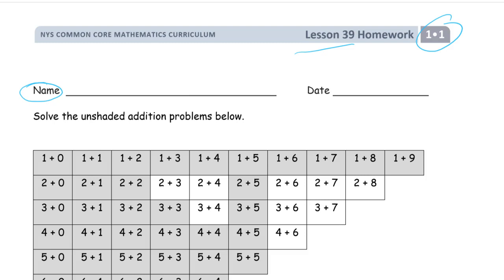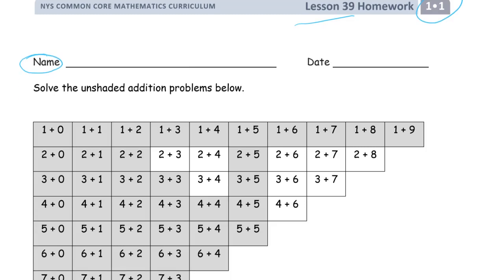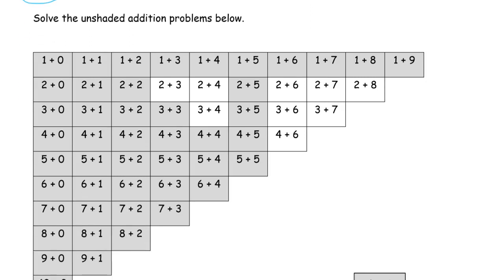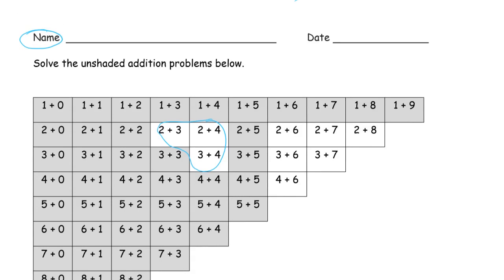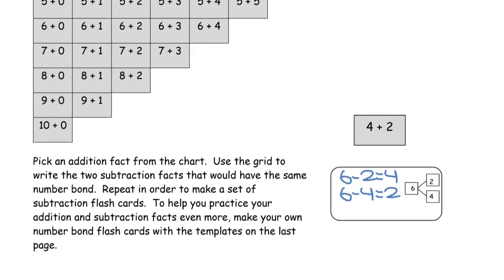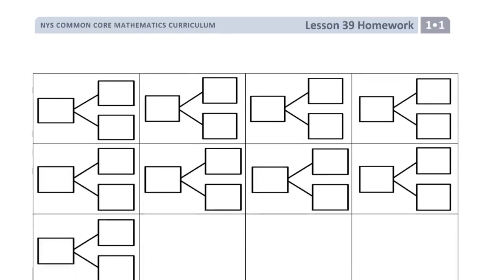What we're going to do in this homework is the same as yesterday's homework. It's the same chart, except now we're going to solve the ones that we didn't solve for Lesson 38's homework. We're going to solve these, and we're going to make the subtraction cards for those here, and then we have a page to do the number bonds too.